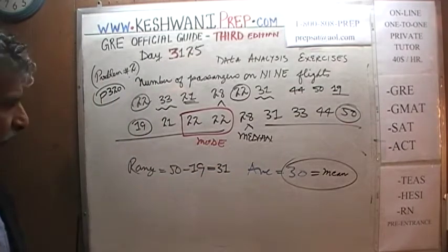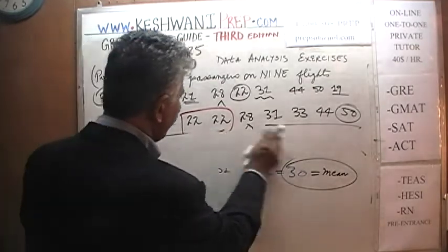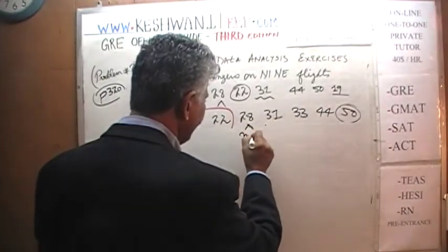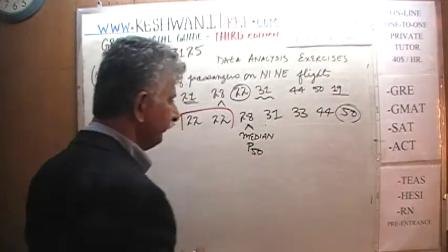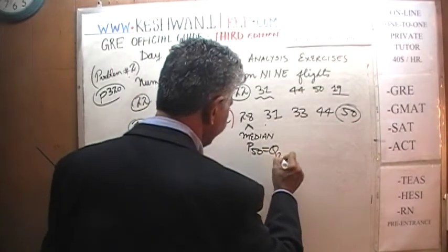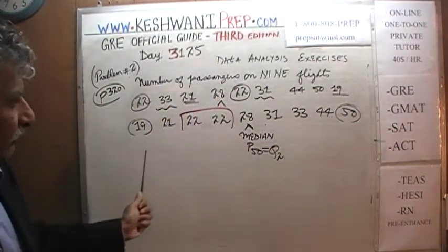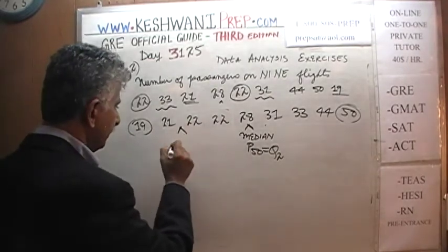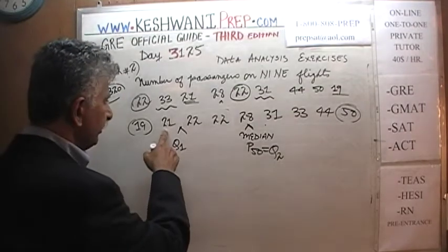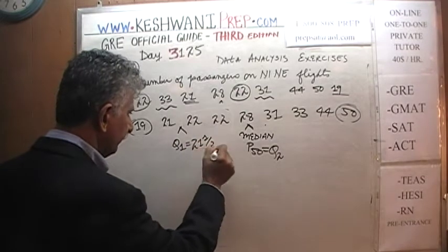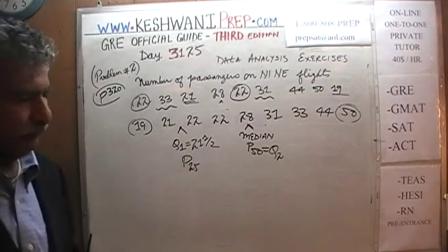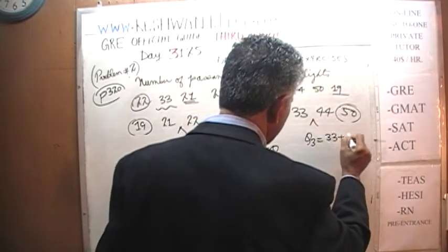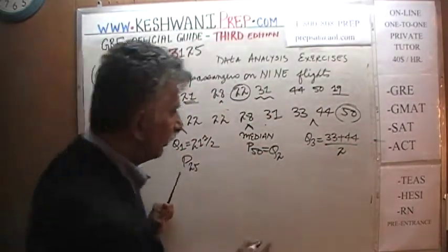Now let's worry about the interquartile range. We already have a marker for the median — that's our 50th percentile, second quartile. For the first quartile: since there are 4 observations on each side of the median, we need 2 in each quartile. The boundary for the first quartile is the average of 21 and 22, which is 21.5 — that's also the 25th percentile. Similarly on the other side, the third quartile is the average of 33 and 44.